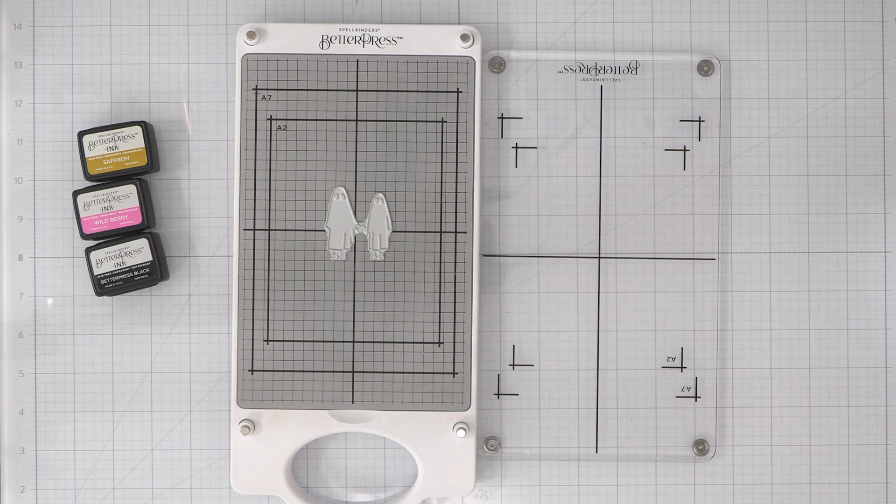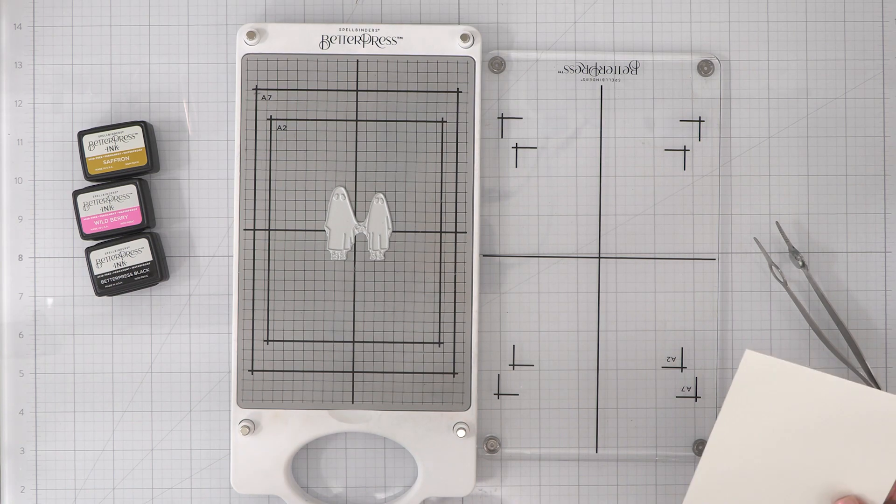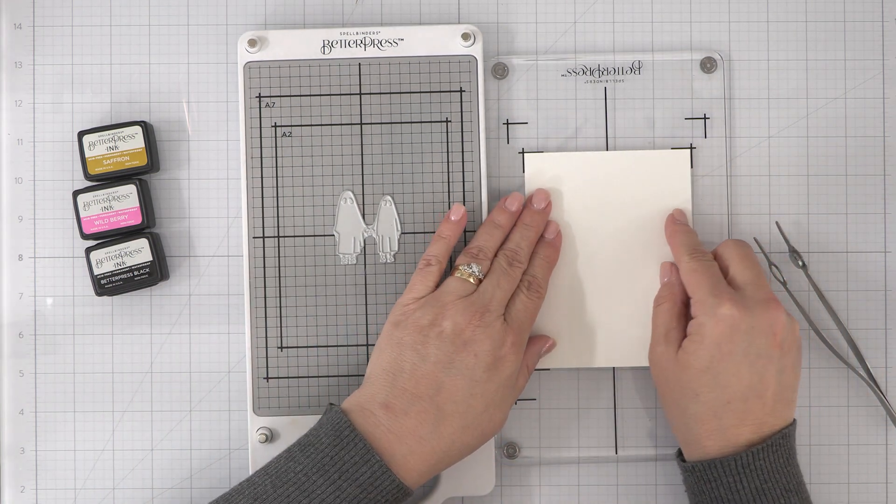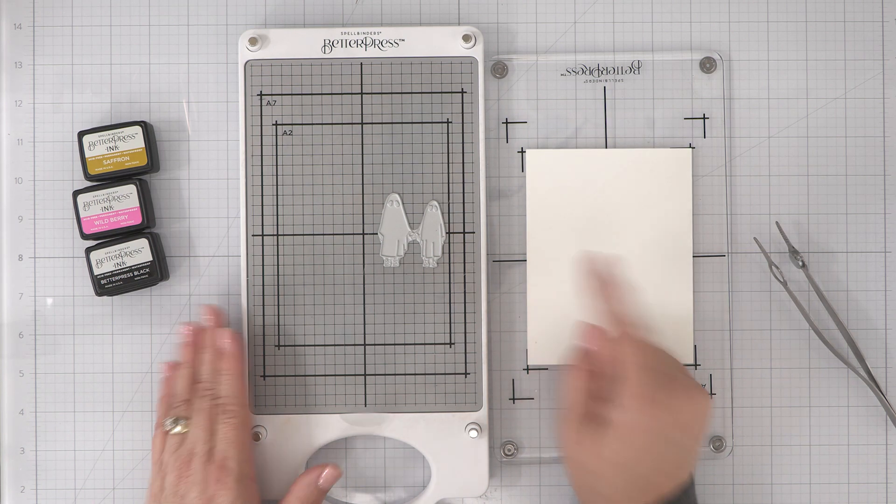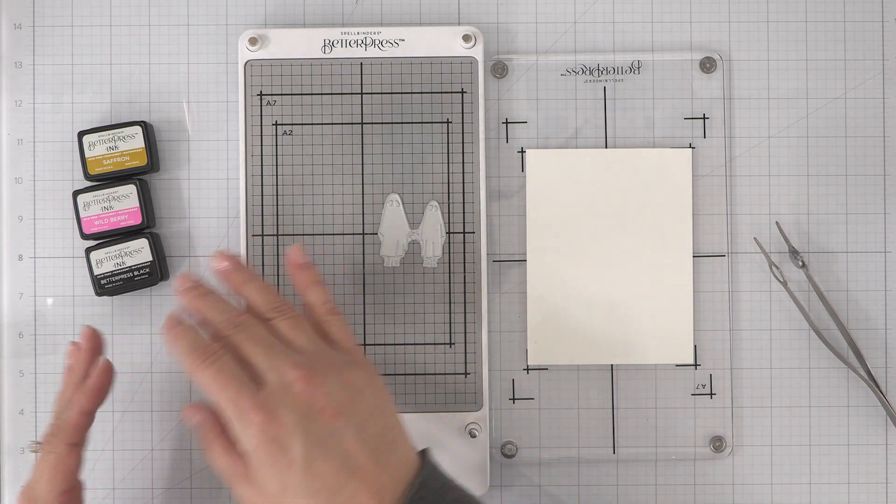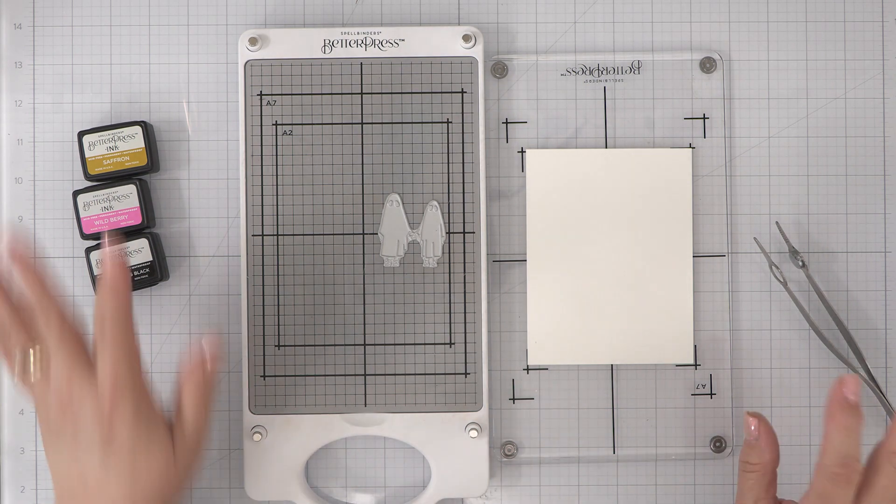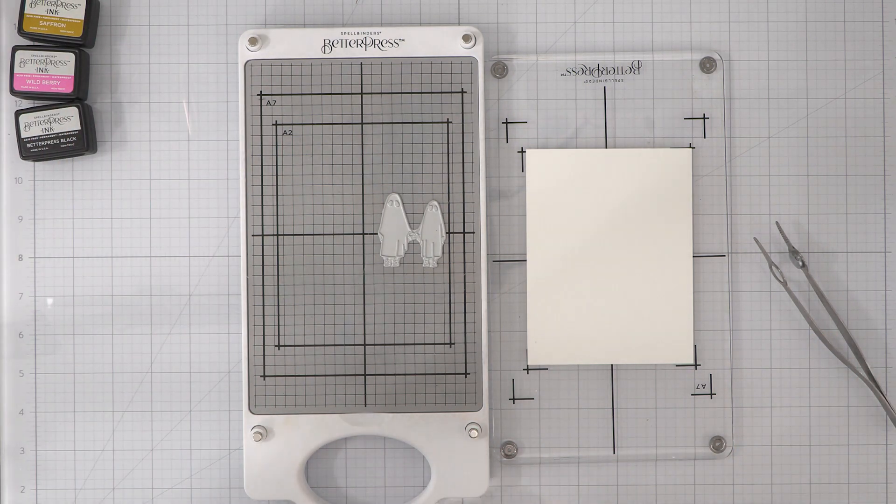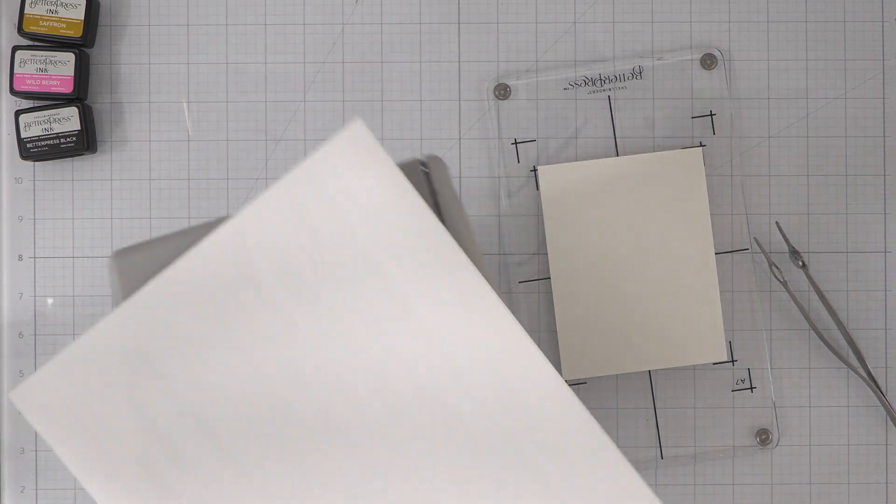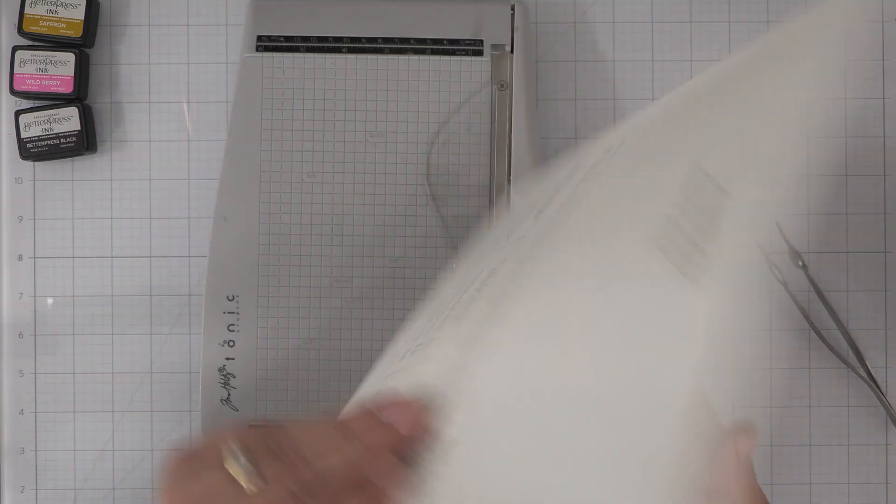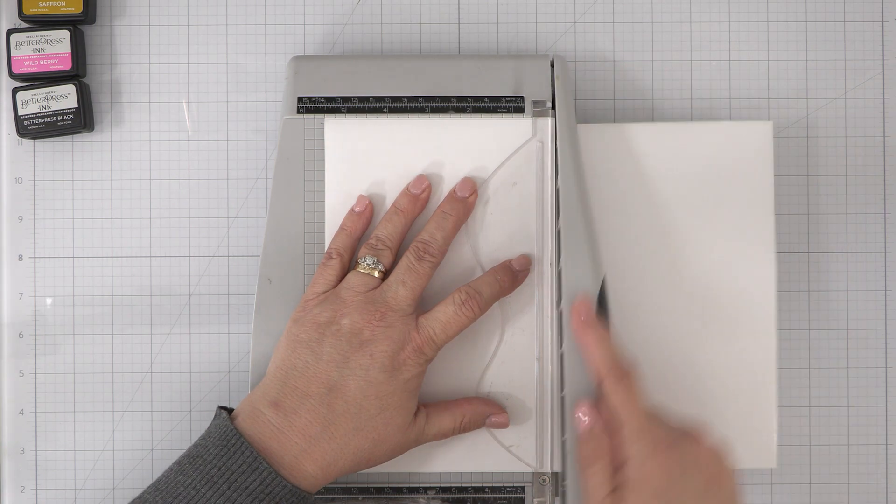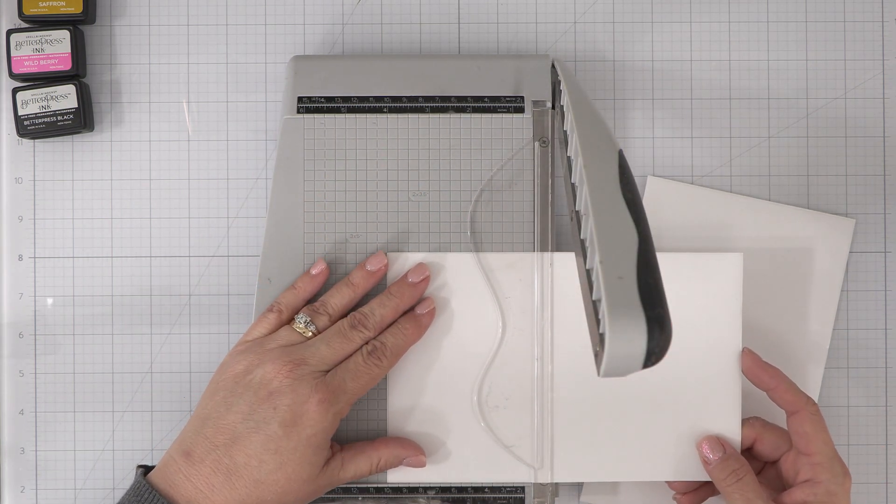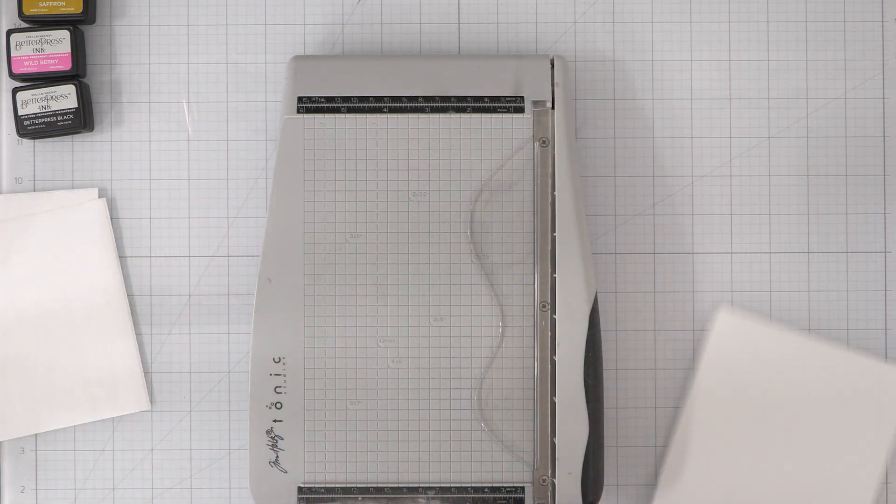The problem that I found that I was having when I was trying to do either patterns of repeat stamping with this or even random stamping is trying to position the plates so there's enough space in between where I'm positioning it and what I've already stamped. Also getting it positioned just right so that I'm not stamping over what I just stamped. So I played around with a few ideas and I came up with this very simple technique.